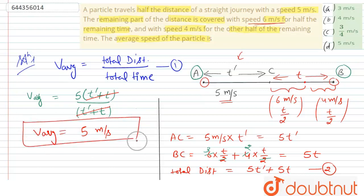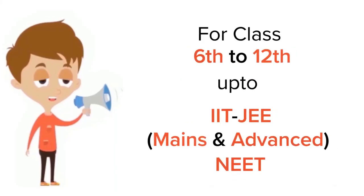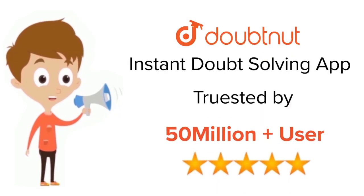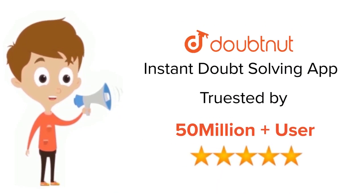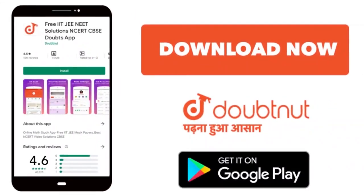So the final answer is 5 meter per second and the correct option is B. Thank you. For class 6 to 12th, IIT JEE and NEET level, trusted by more than 5 crore students — download the DoubtNet app today.